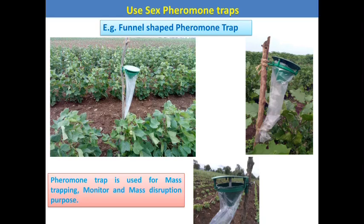The sex pheromone trap is a funnel-shaped trap. The purpose of installing this sex pheromone trap in our field is for mass trapping, monitoring, and mating disruption. This sex pheromone trap is installed just above the plant or crop height, about two feet. It is mostly effective against lepidopteran moths or lepidopteran insects.